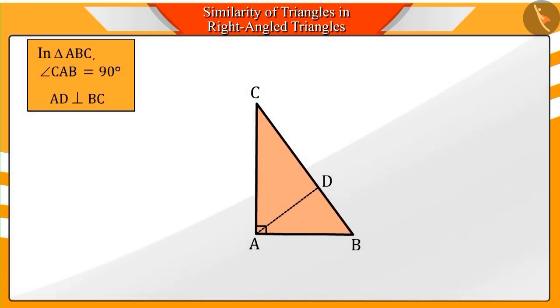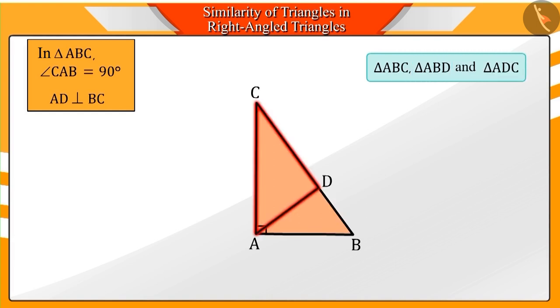Absolutely correct. Here, we get three triangles: Triangle ABC, Triangle ABD, and Triangle ADC.